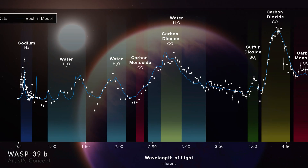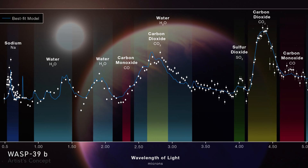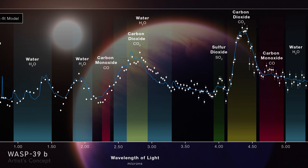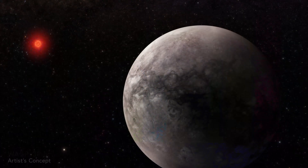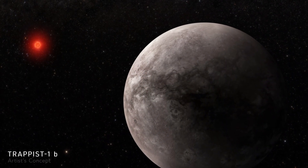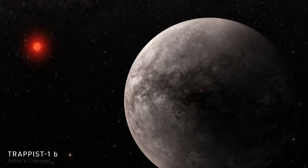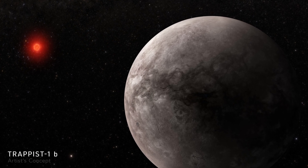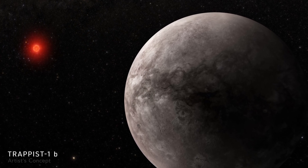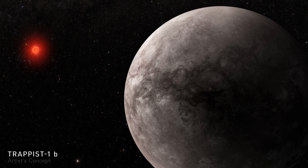From finding sulfur dioxide present in the atmosphere of gas-giant exoplanet WASP-39b, to noting the absence of a significant atmosphere on TRAPPIST-1b, a rocky exoplanet somewhat larger than Earth, Webb is advancing the field of exoplanet science.